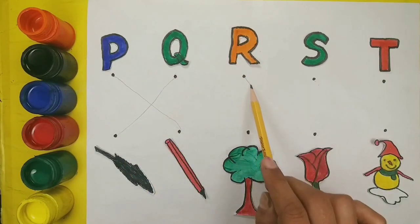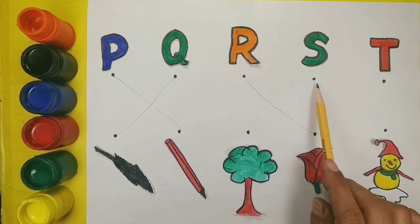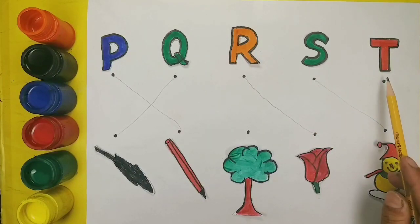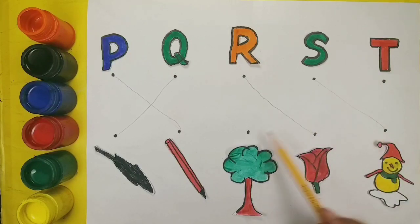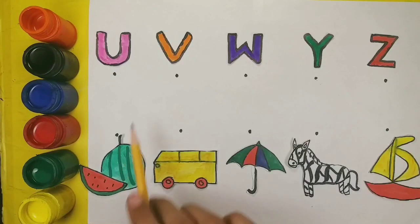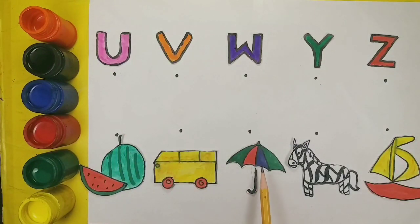R. R for rose. S. S for snowman. T. T for tree. U. U for umbrella.